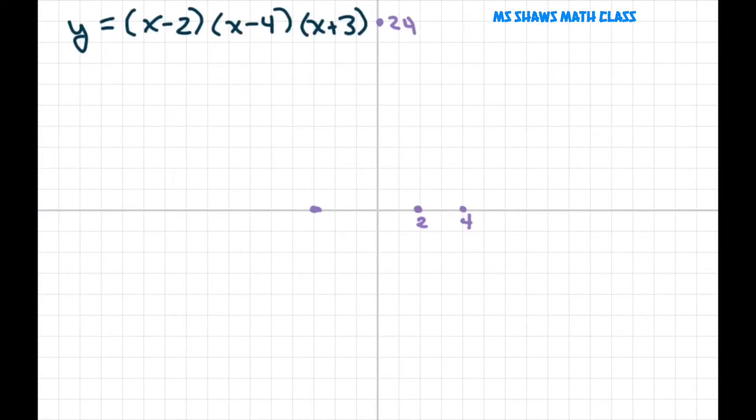Now remember we're starting in quadrant 3 and we should be ending here in quadrant 1 as we graph from left to right. Now we go up to our first zero, negative 3. And that's an odd number here. So that means we can cross here.